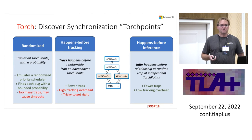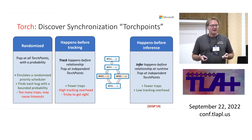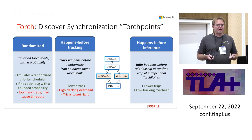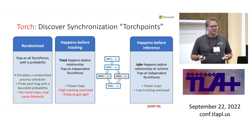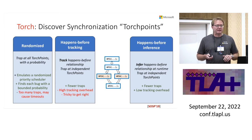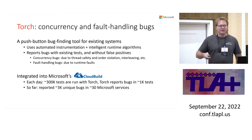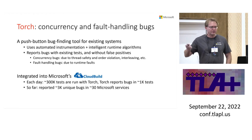Torch operates below the design level and works with arbitrary code, then infers synchronization primitives. Furthermore, it infers causality relations to make state space exploration more effective, and also injects faults and services. This has a much wider scope and set of tools. It's not an open source project but runs internally on hundreds of thousands of tests each day.